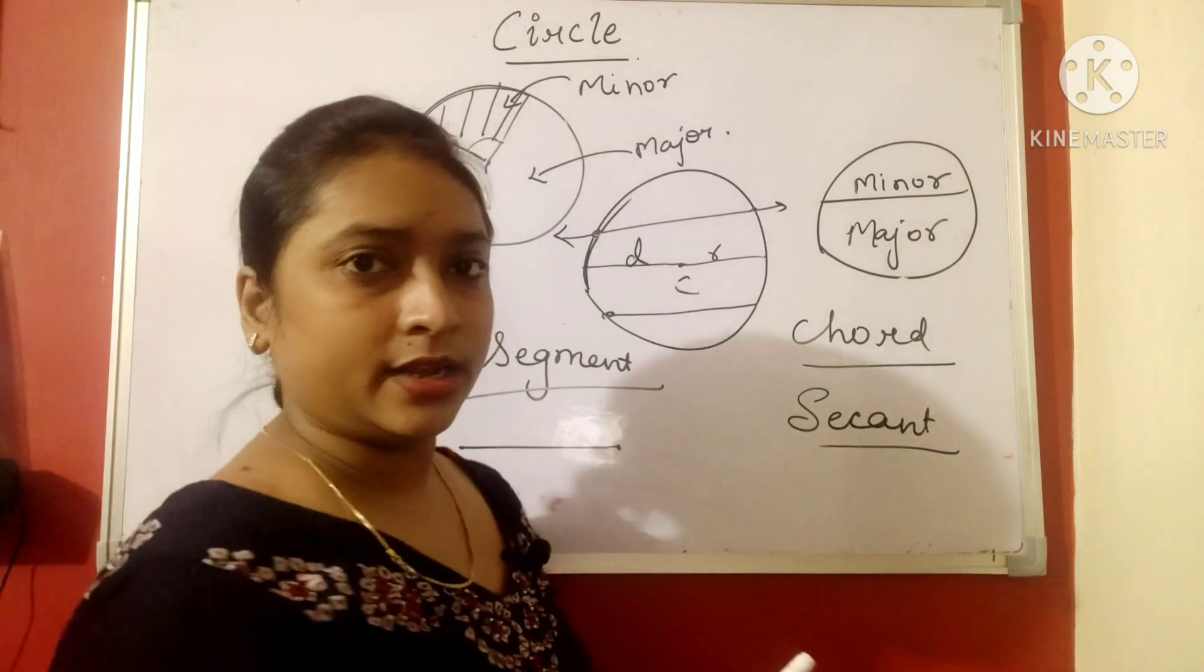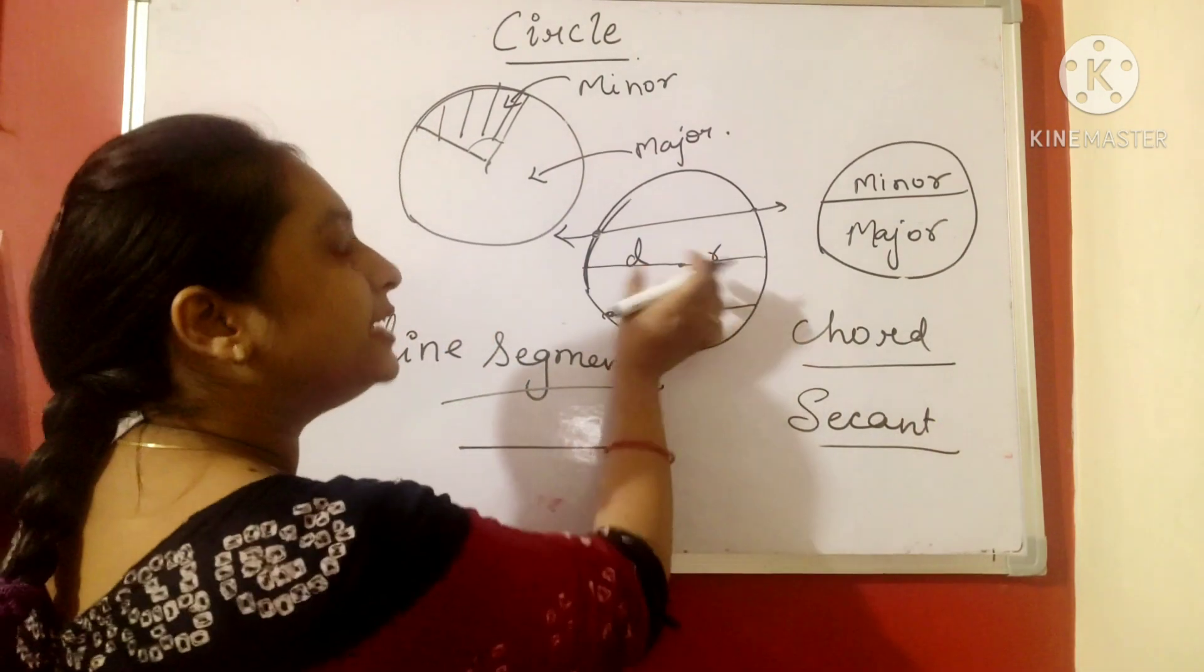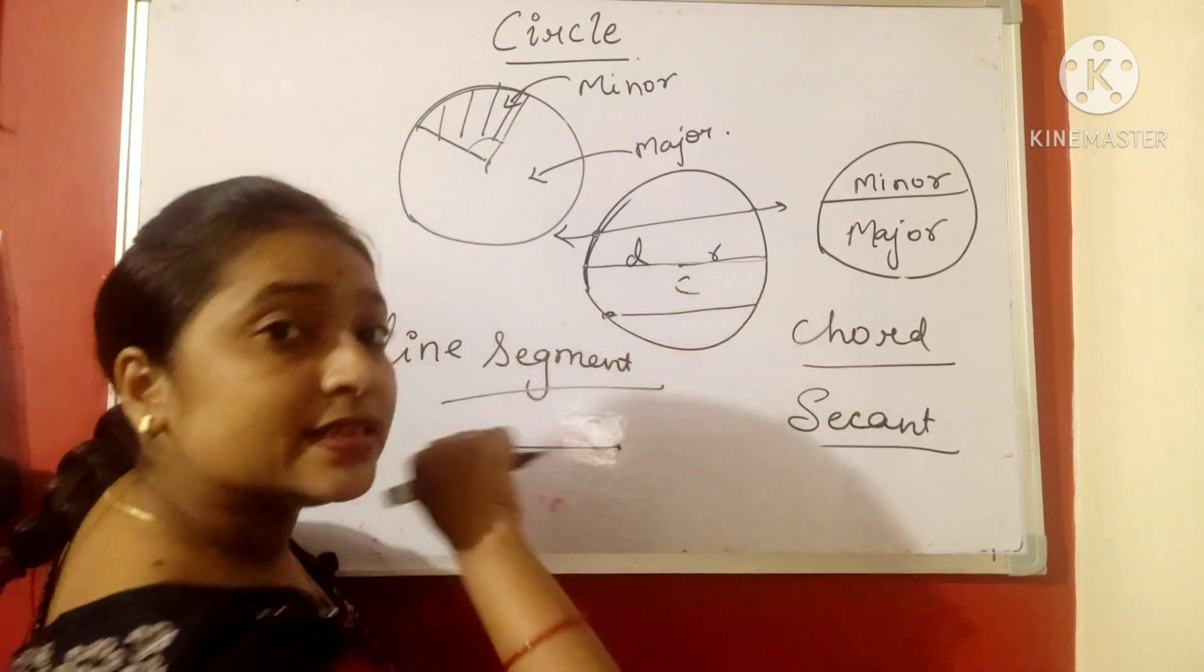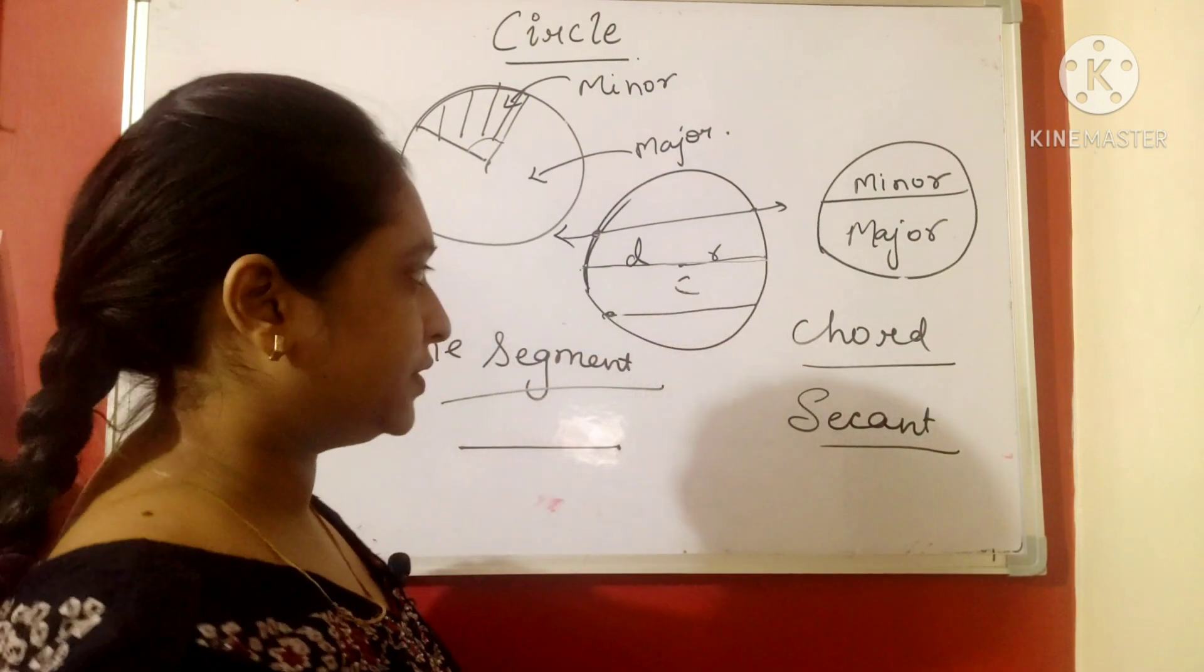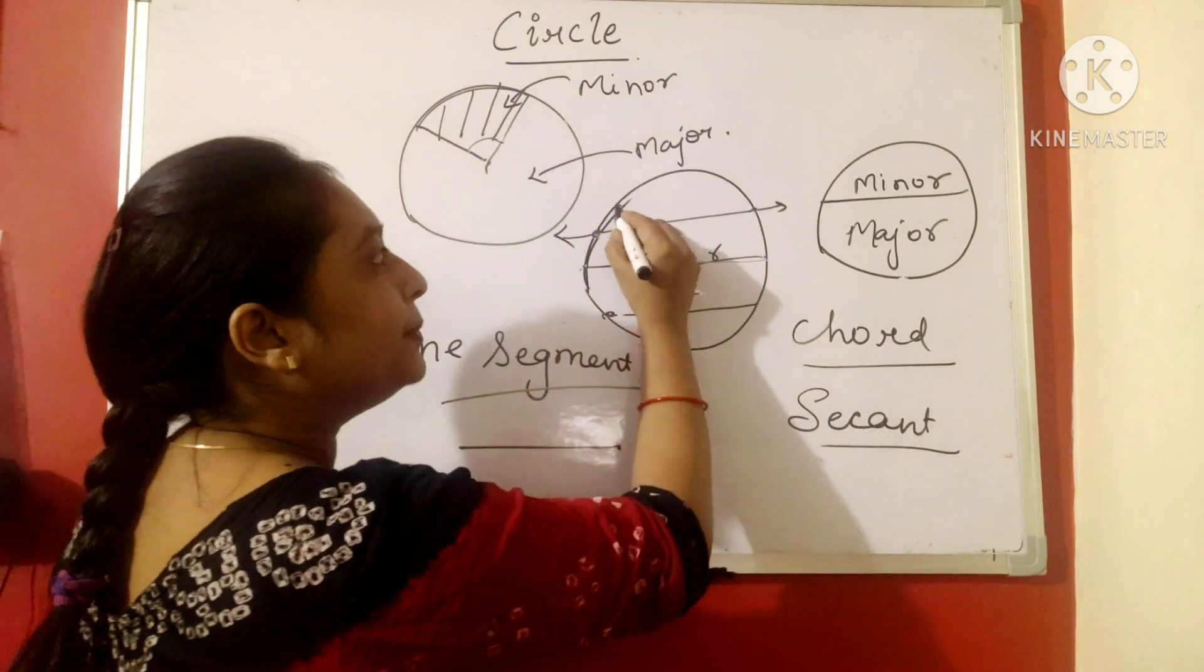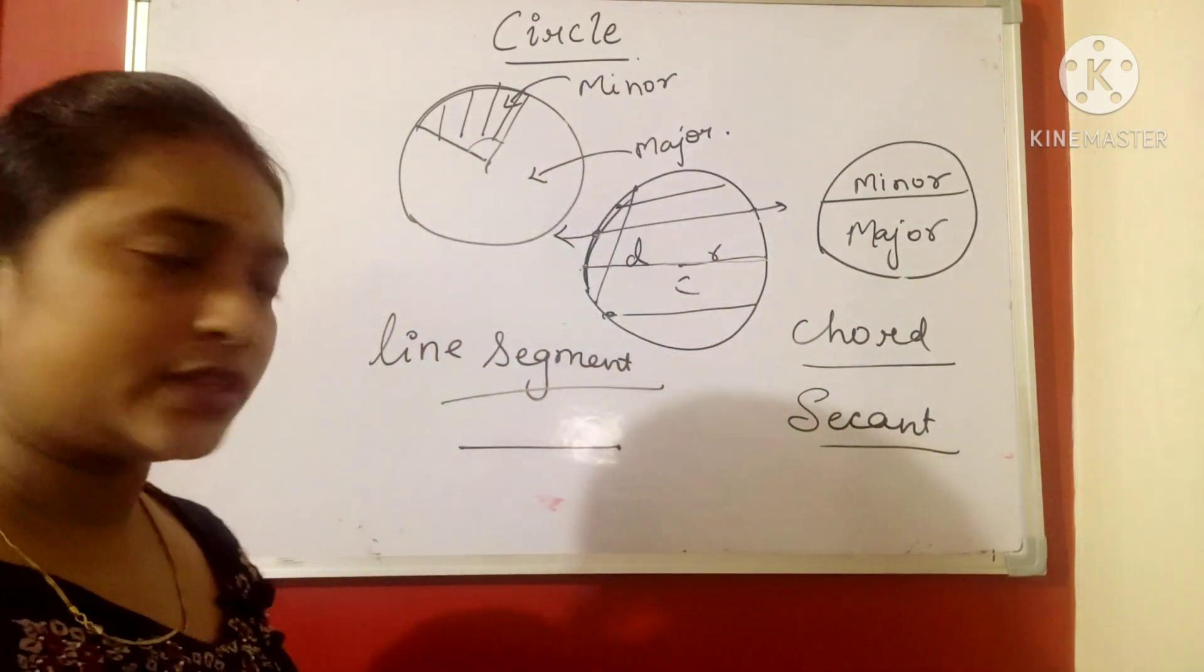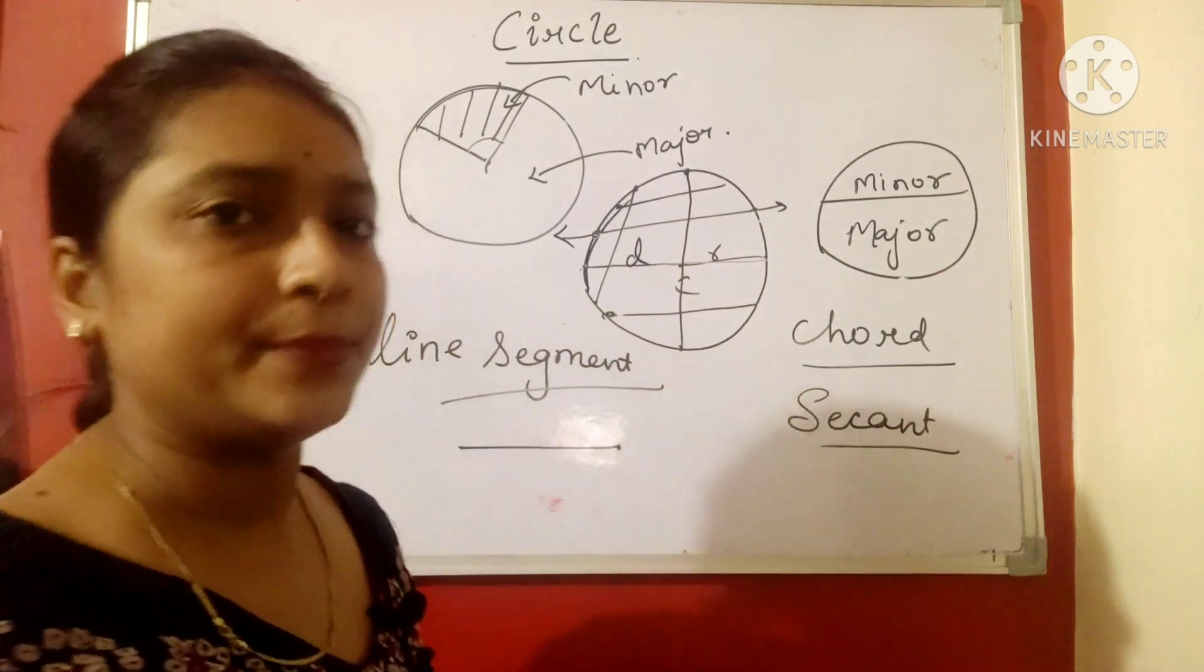Now the chord. There can be so many chords. The longest chord is the diameter. What is actually diameter? Diameter is a line that passes through the center and touches the two end points of the circle. So chord can be any line on the circle that is touching the two points of the circle. The longest possible chord in a circle is its diameter.